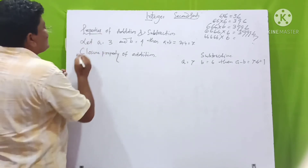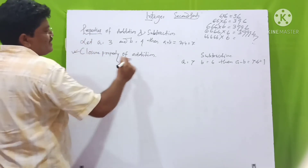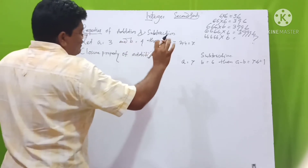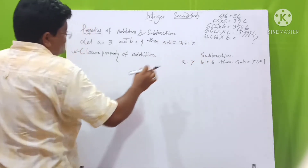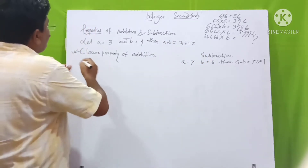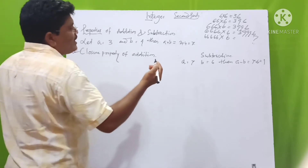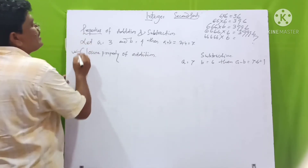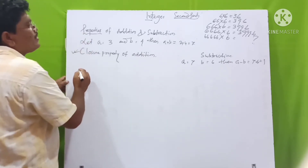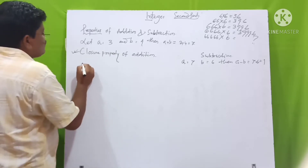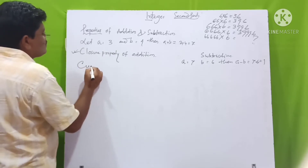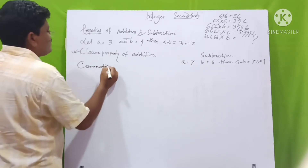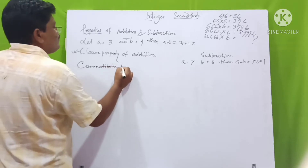Integers are closed under addition and subtraction. That is the first property — closure property — for both addition and subtraction. Both are closed under integers. Now, I will take another property.